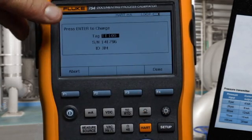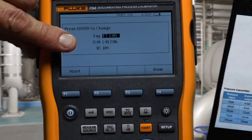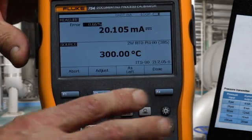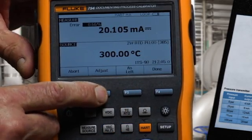Select done. The tag and the serial number and the ID of the person doing the work is recorded. Since the transmitter failed, we need to perform an adjustment.